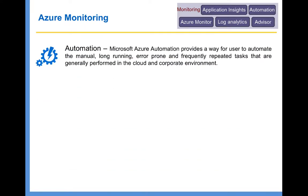The next thing is automation. Microsoft Azure Automation provides a way for users to automate manual, long-running, error-prone, and frequently repeated tasks that are generally performed in the cloud and corporate environments. Using Azure Automation, you can automate any kind of administrative task. For example, you might want to shut down a virtual machine at 8 o'clock at night and restart it at 8 o'clock in the morning — you can do this using Azure Automation. There is something called runbooks, which are Azure PowerShell scripts you write to carry out administrative tasks. We have a dedicated lecture on automation and a hands-on exercise showing how to start or stop a virtual machine using a runbook.